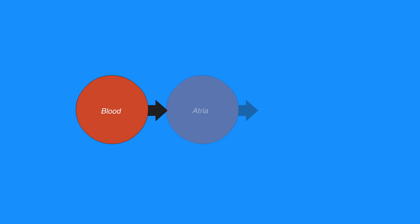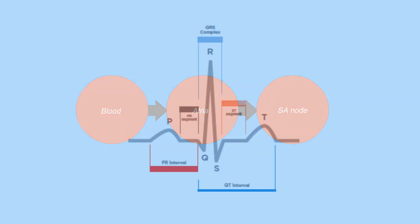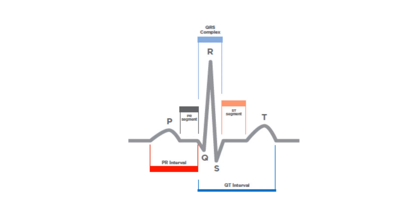When blood enters the atria of the heart, an electrical impulse sent from the SA node conducts through the atria, resulting in atrial contraction, which registers as the P wave on an electrocardiogram or ECG strip.